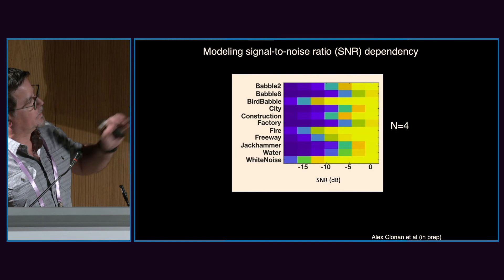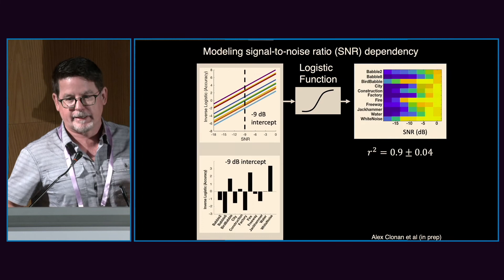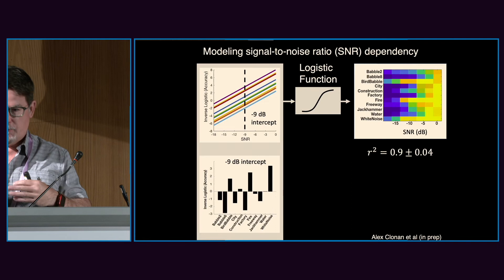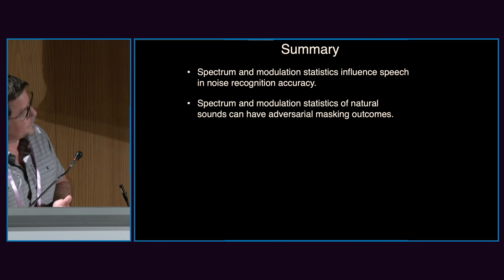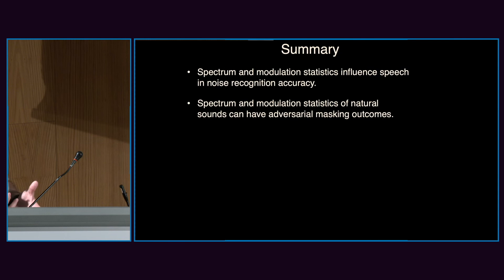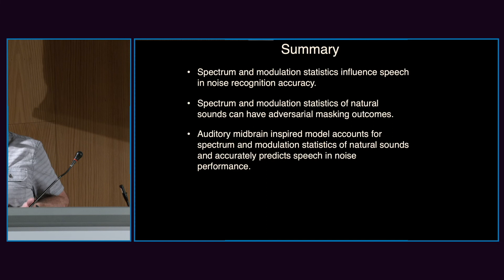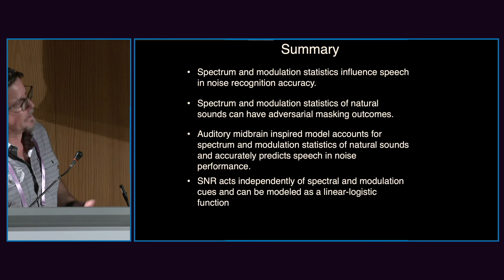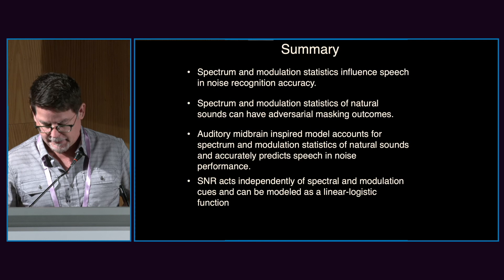Because of time I'll skip the poster details, but we also have a way of explaining the effects of SNR — as you make the background sound louder or softer, we can explain those effects with a log-linear regression. As a whole, this demonstrates that the spectrum and modulation statistics of natural sounds are really critical in masking. We've used this auditory midbrain-inspired model to predict perceptual sensitivity, and this relatively simplistic model does quite well. We can also predict SNR effects in a relatively simple fashion.